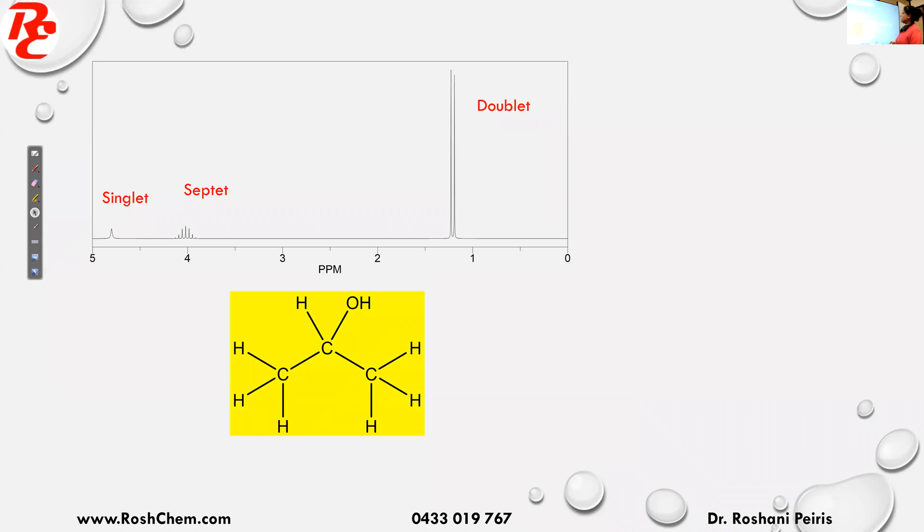So now we'll see how to get the structure of this unknown compound. So that's the ¹H NMR given. So now we had a singlet here, a septet, which means splitting into seven, and that's a doublet.